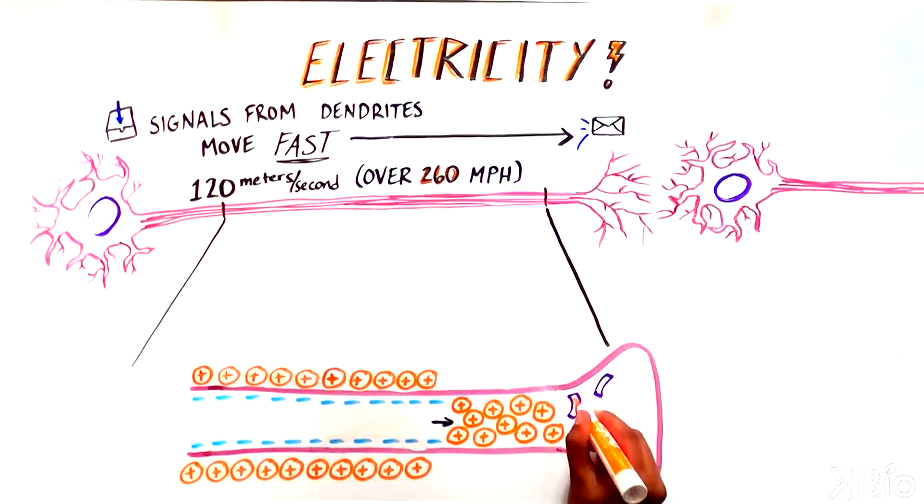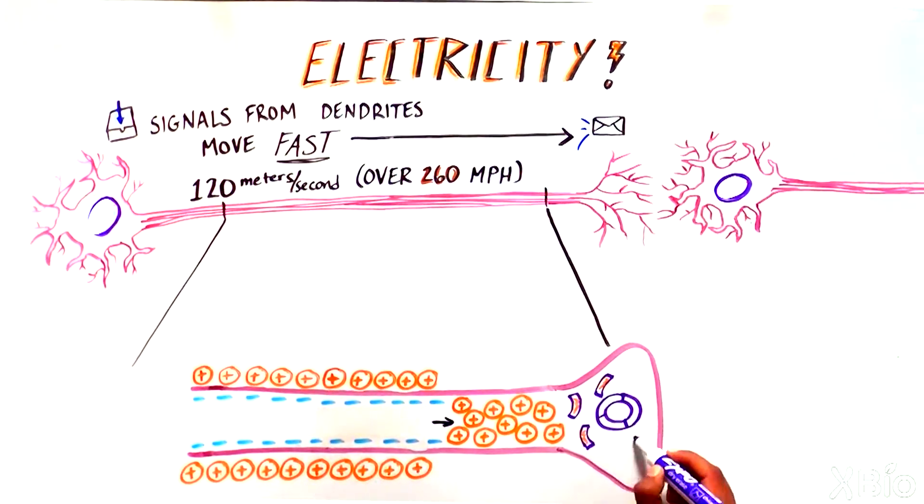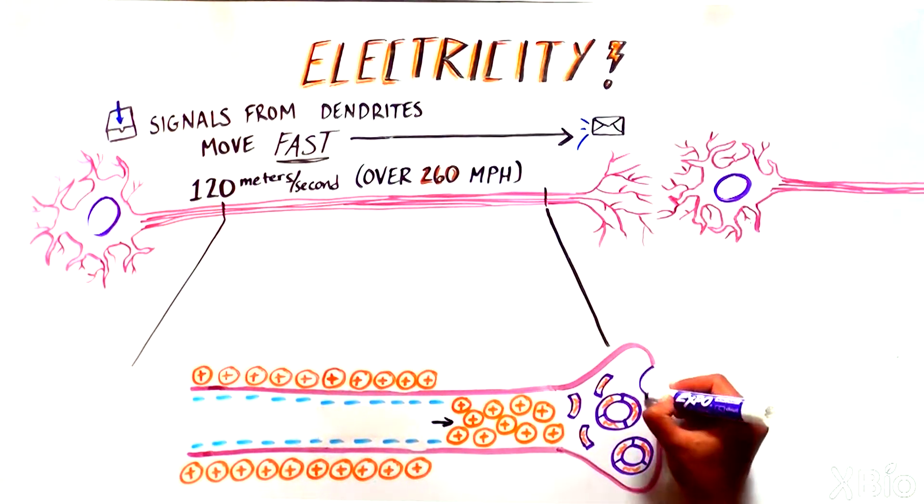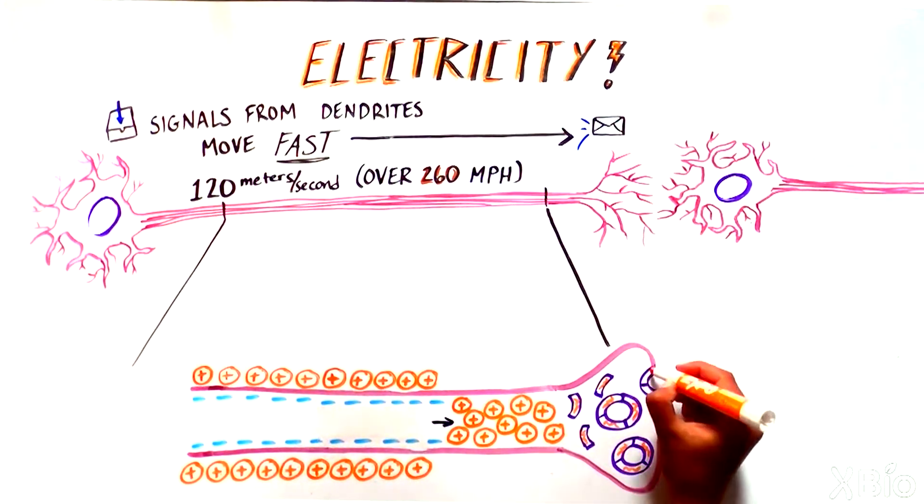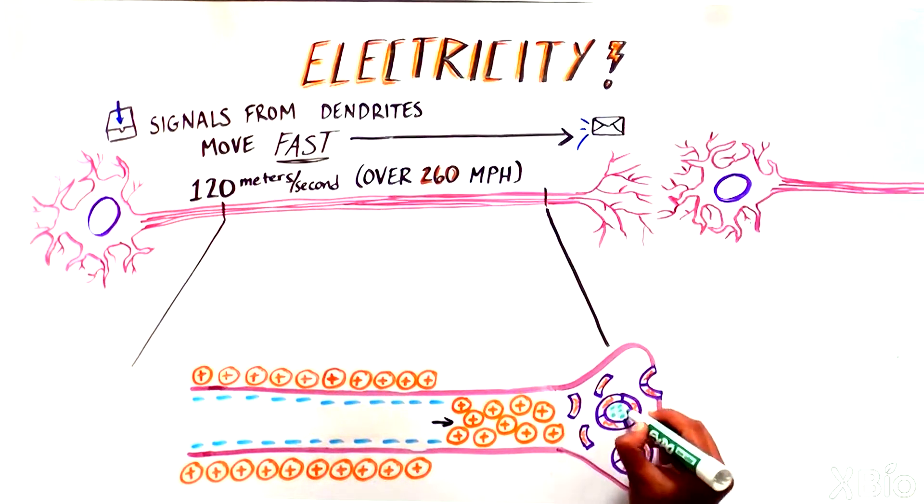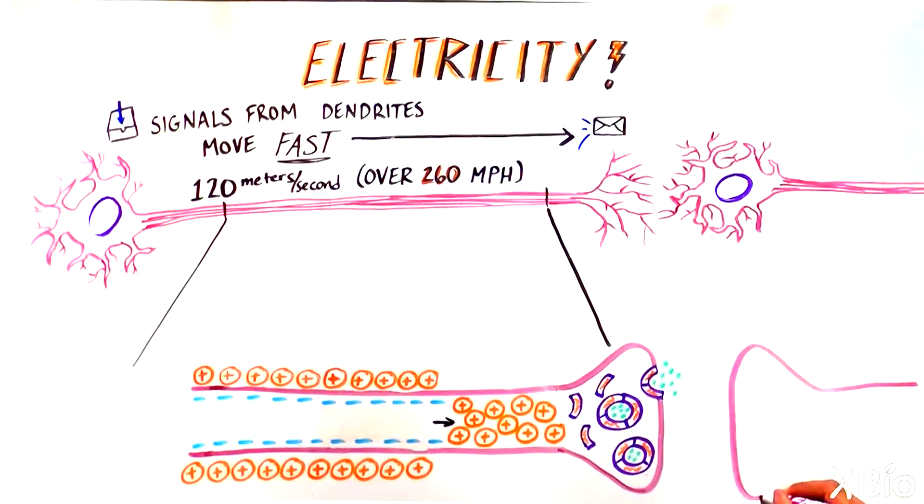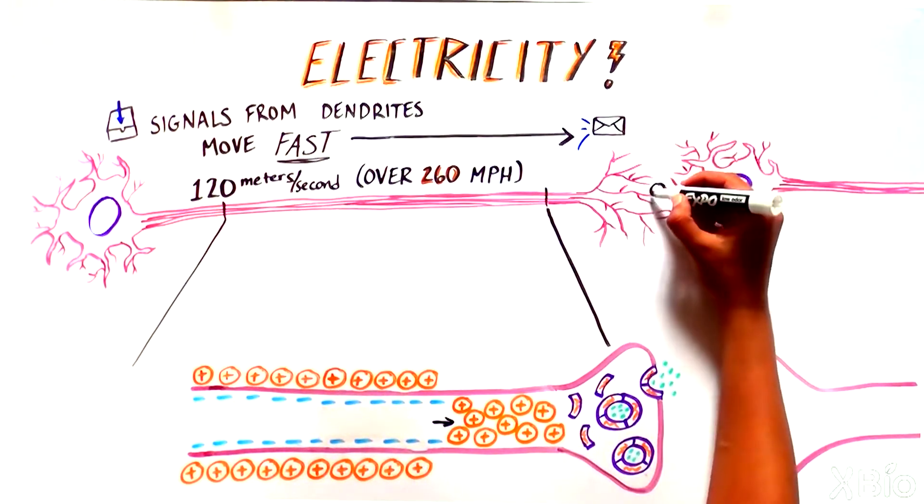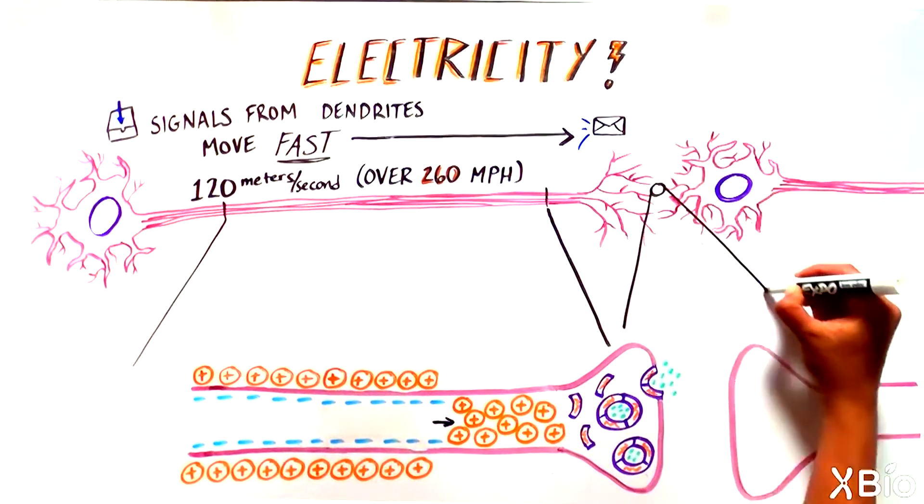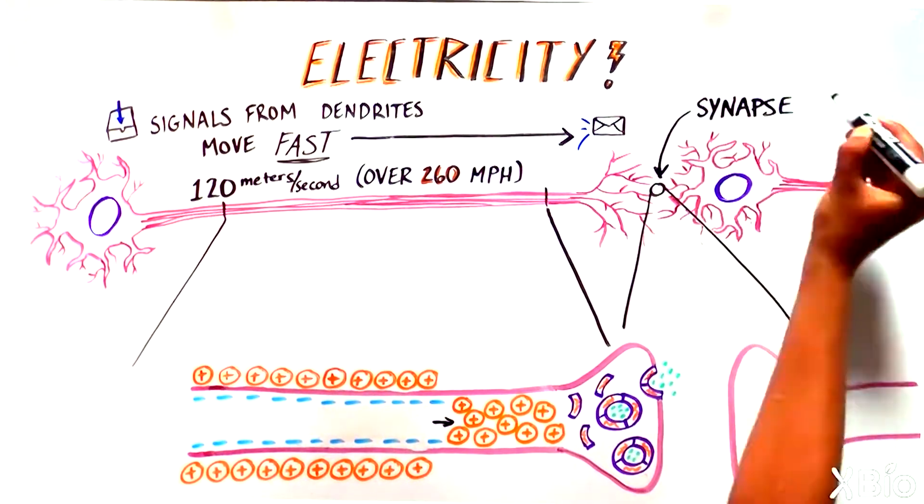When an action potential reaches the end of an axon, it triggers the activation of electrically sensitive proteins. These proteins then facilitate the release of neurotransmitters, small molecules that neurons use to communicate with each other, into the tiny space where two cells meet, also known as a synapse.